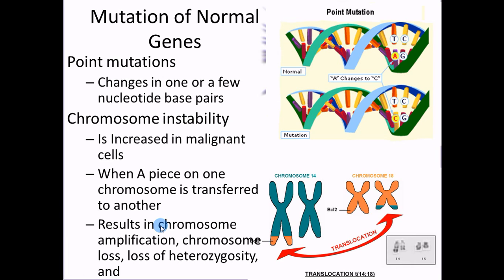To review: mutation of normal genes — we talked about this in genetics. You're going to have point mutations and chromosome instability. Point mutations are base pairs that are misaligned — one single set of letters that's changed. It's an accumulation of different base pair changes: one base pair affects one gene, another affects another, until finally you have a cancer. Another problem is chromosome instability — things like Robertsonian translocation, where a piece of one chromosome breaks off and gets glued onto another.